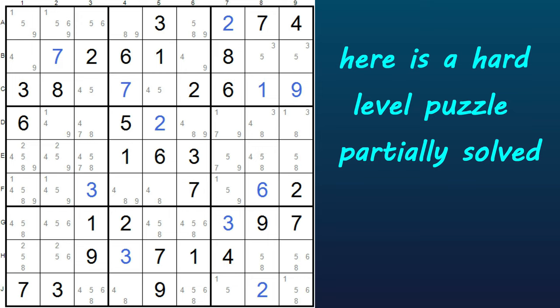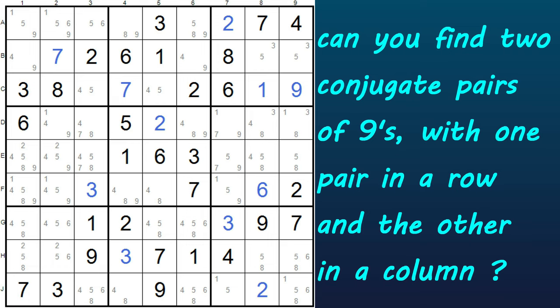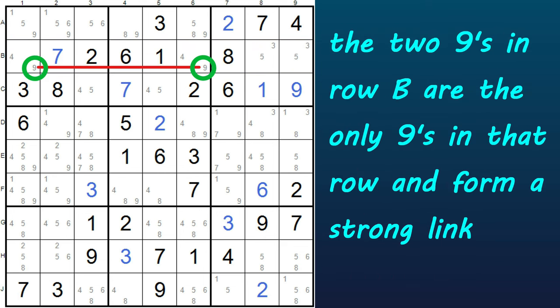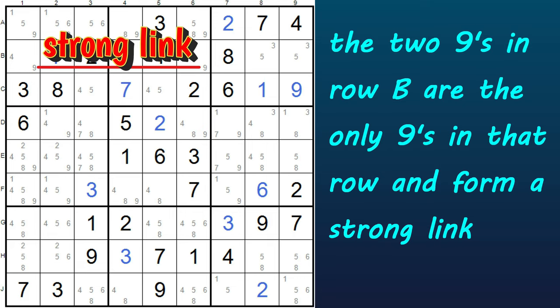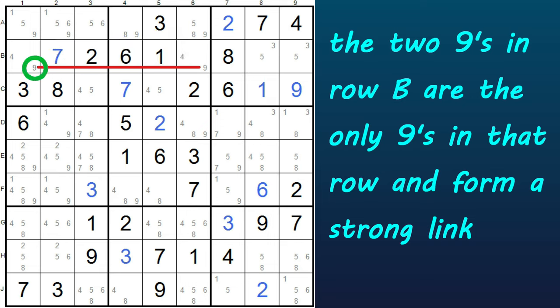Now concentrate on the number 9. Can you find two conjugate pairs of 9s? One pair is in a row and the other pair in a column. In this example, there's a conjugate pair of 9s in the second row, row B. These two 9s are the only possible 9s in this row, and therefore they form a strong link. One will be true and the other will be false — they cannot both be true, and they cannot both be false.